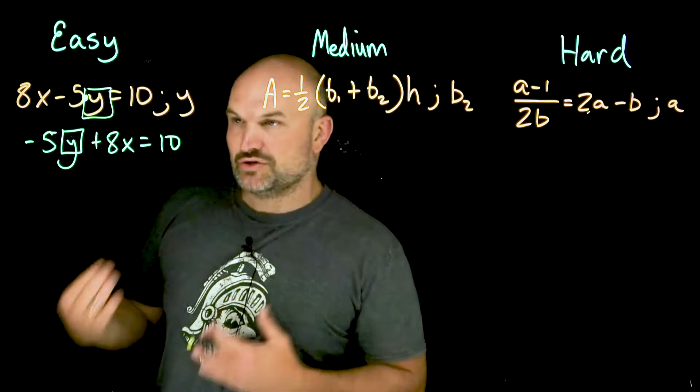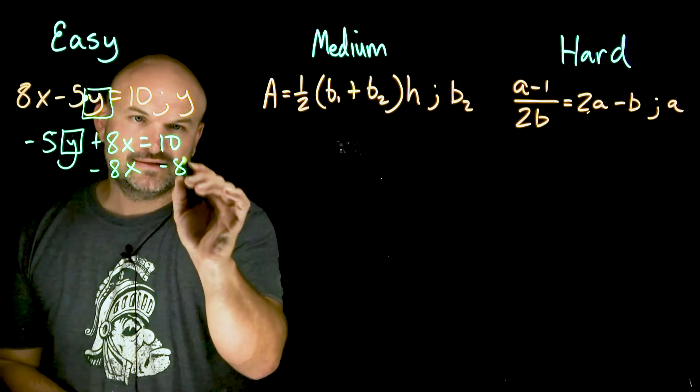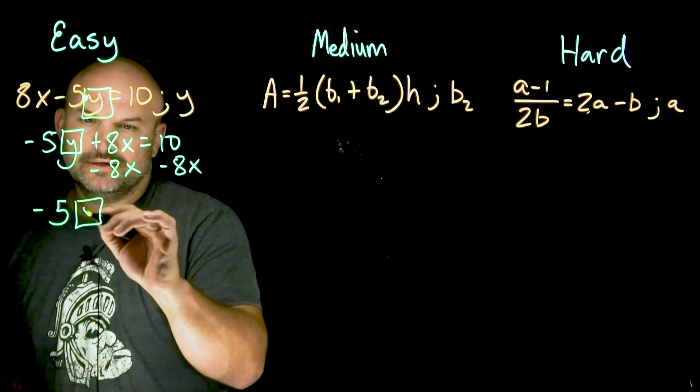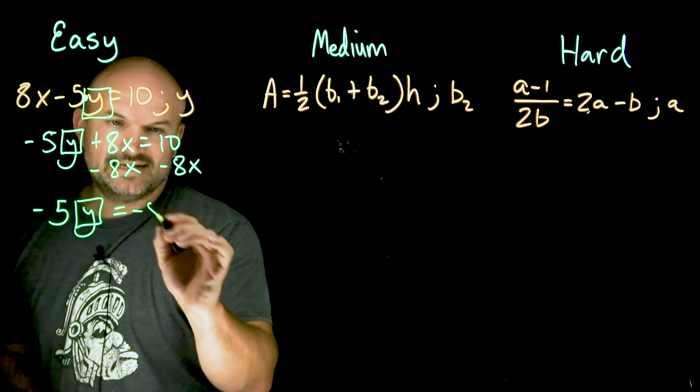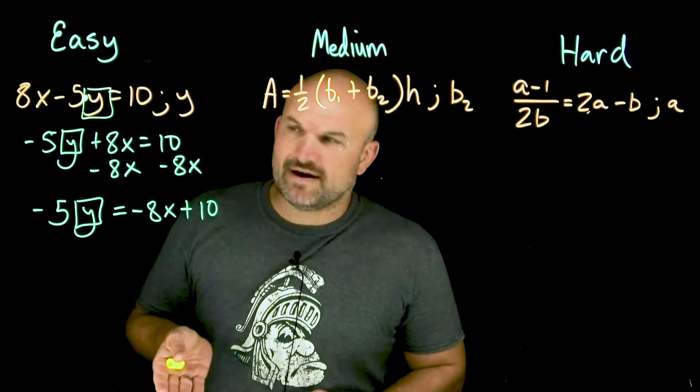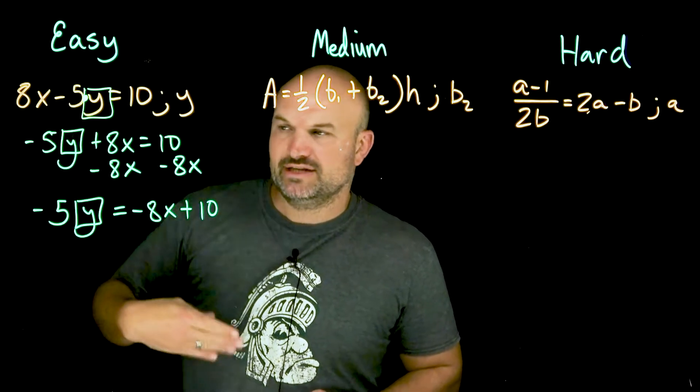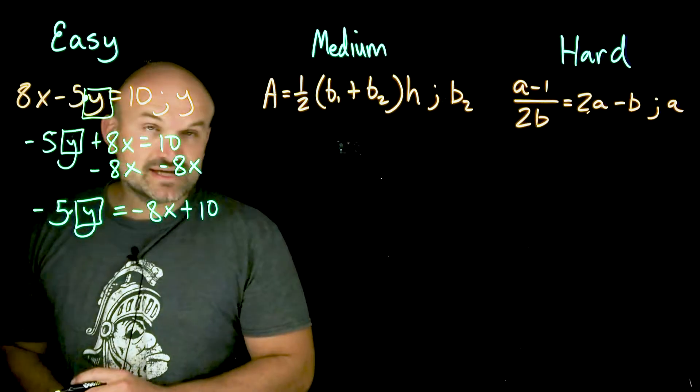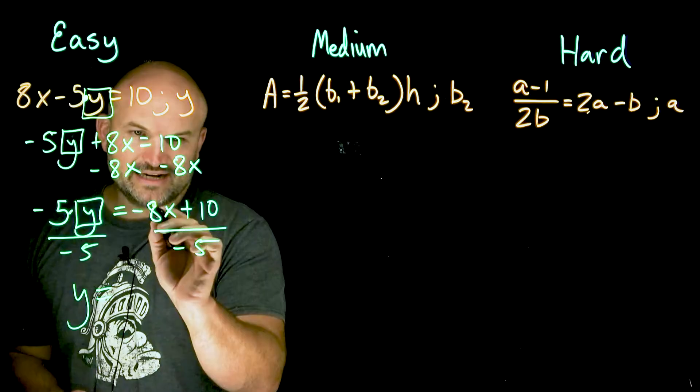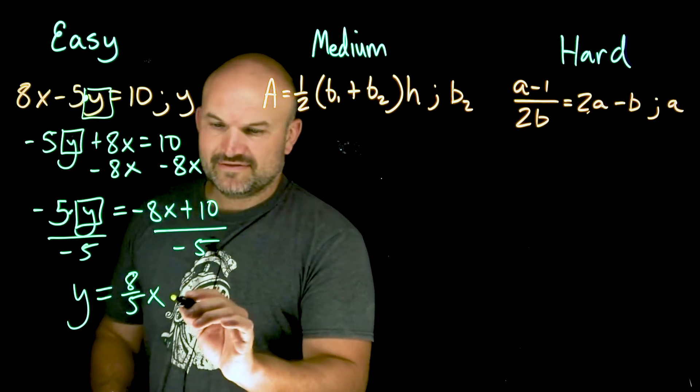All right, so now let's use our inverse operations and reverse order of operations. The inverse operation of adding an eight x is going to be to subtract an eight x. Then I need to make sure I do it on both sides, which is my properties of equality. And then I have a negative five times y equals a negative eight x plus 10, because remember that's a positive 10, that's why I wrote the plus 10. And the reverse order of operations is telling me to always undo addition and subtraction first, then undo multiplication and division, which now you can see I have a negative five times a y, so I'm gonna divide by a negative five on both sides, and therefore I get a y equals negative eight over a negative five is going to be an eight fifths x, and then 10 divided by negative five is going to be a minus two.